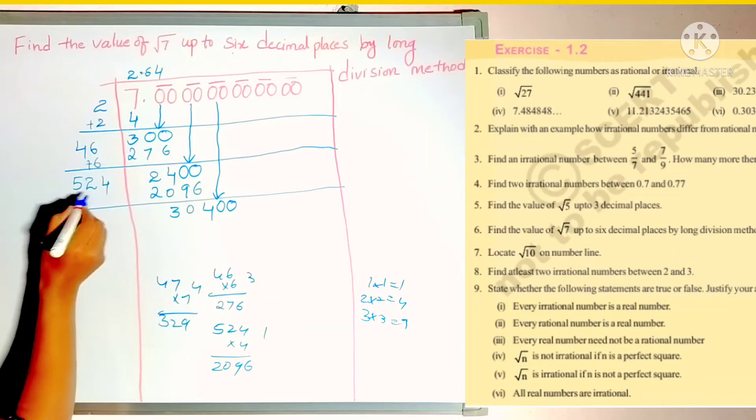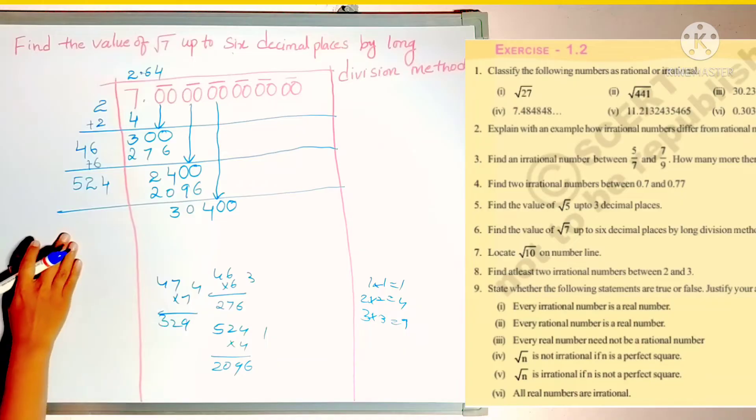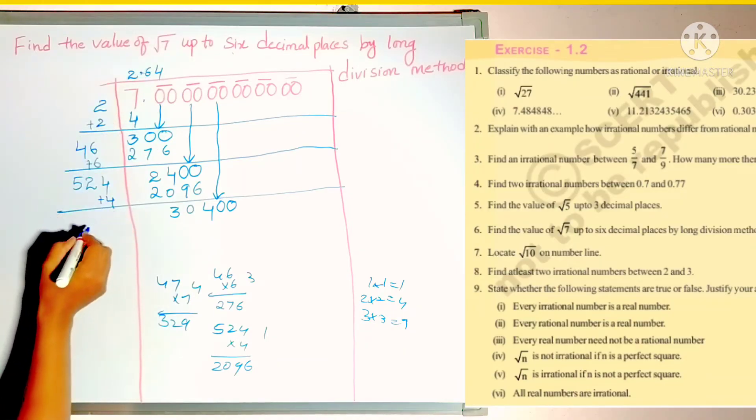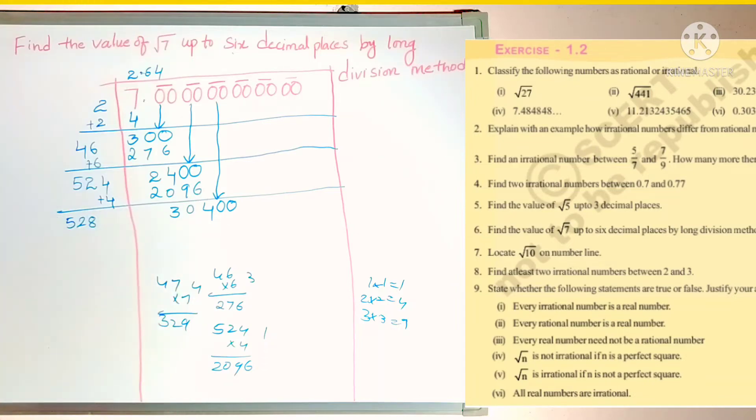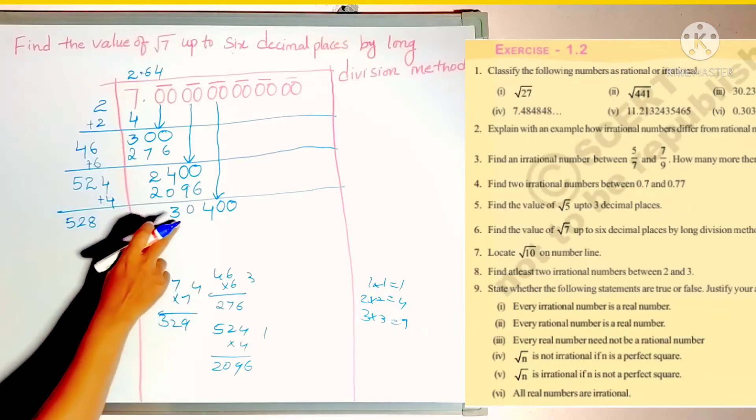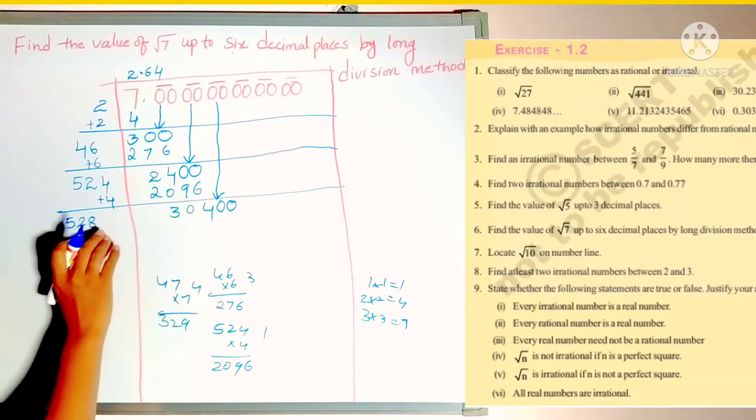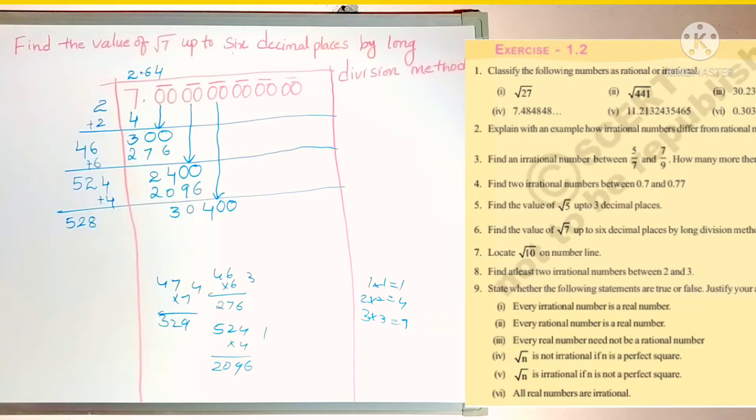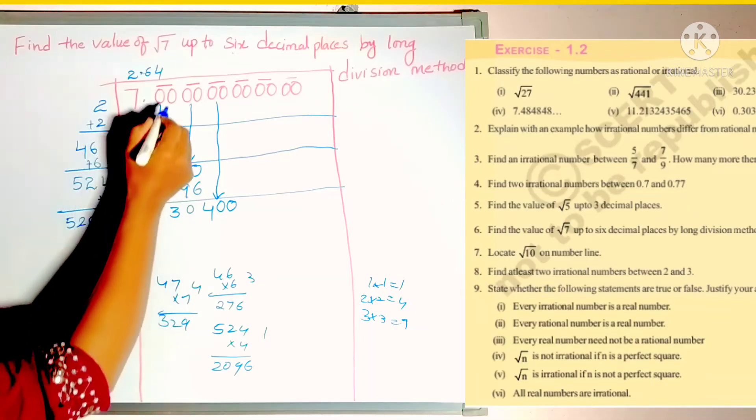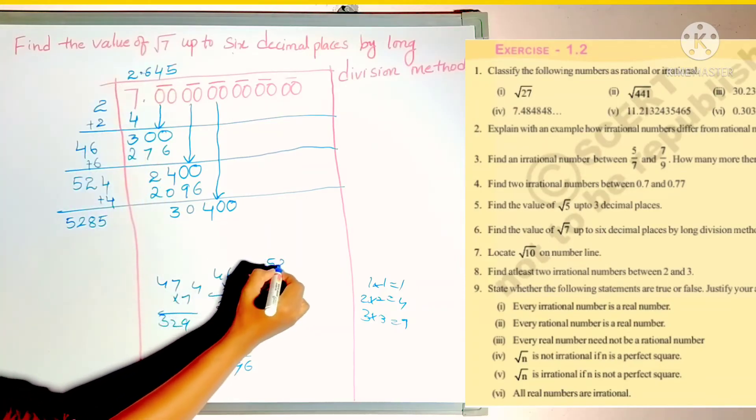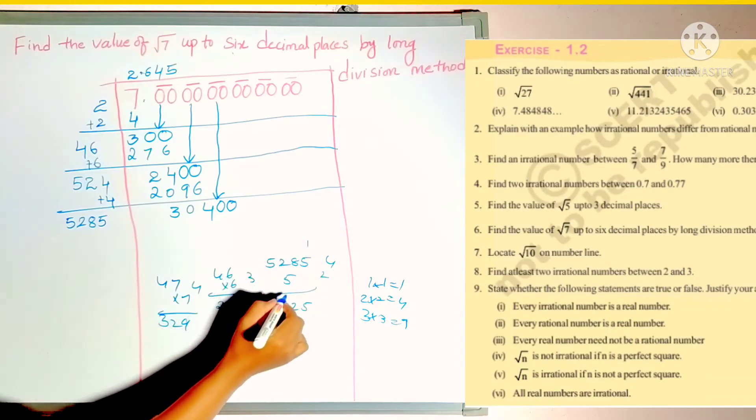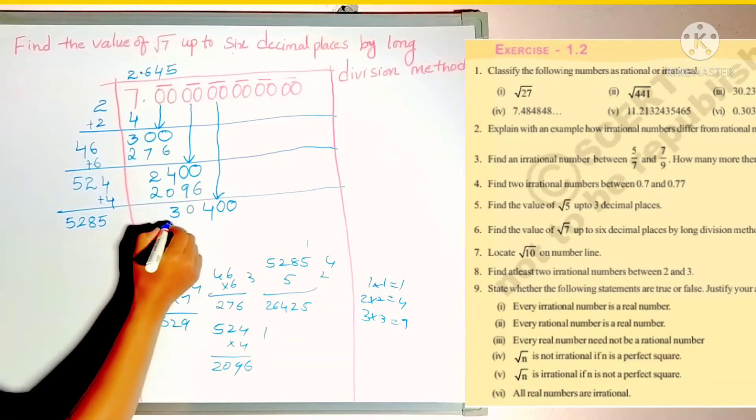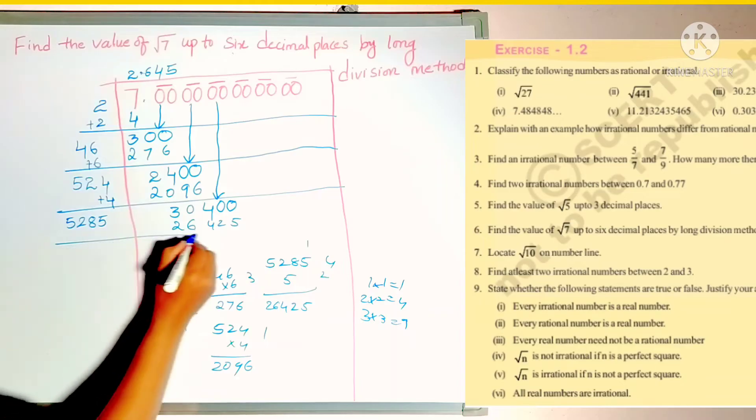Again we write this set of zeros down. Now to this 524, each time your divisor will change. So here we wrote 4, just add that 4. So this is 528. Now you see 5 times 6 is 30, but it is exactly value. So 5 times 5 is 25. So we can check and write. Every time you have to check. So 5285 times 5. This is 26,425.